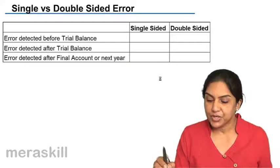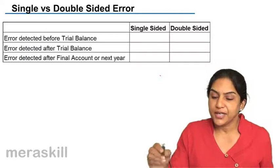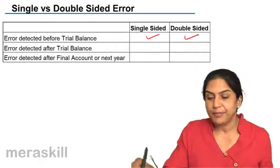These errors, as I said, may be detected before the trial balance. Such an error may be single-sided or double-sided.